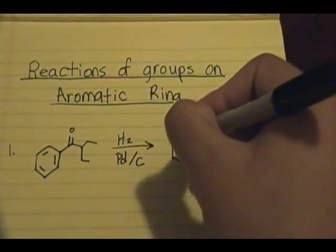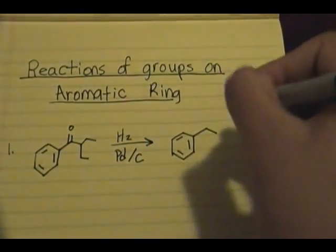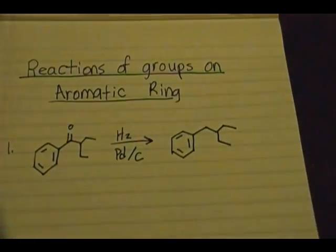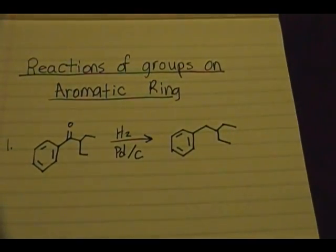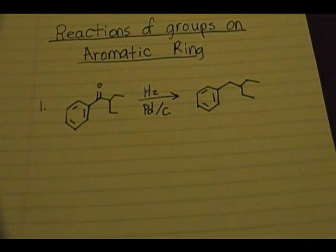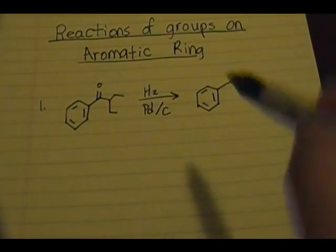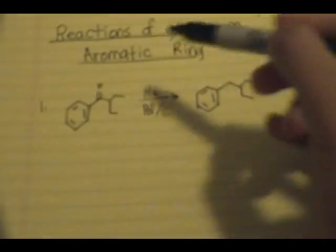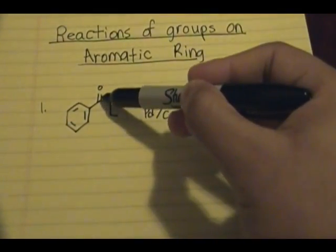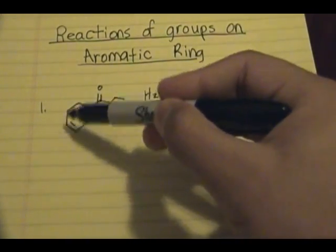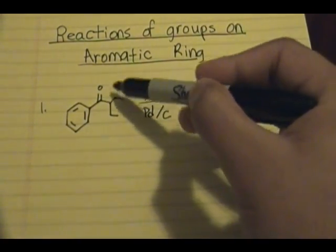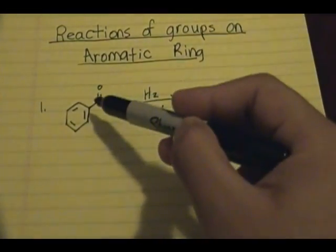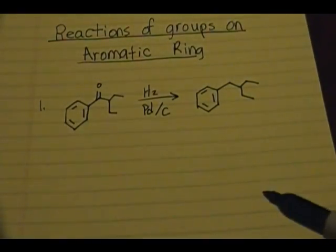The result of this reaction is your aromatic ring with the C=O completely gone. Keep in mind that you can only remove that carbonyl if the carbon of the carbonyl group is directly attached to the aromatic ring. If the C=O is somewhere else in the chain and not directly attached to the aromatic system, this reaction will not work.